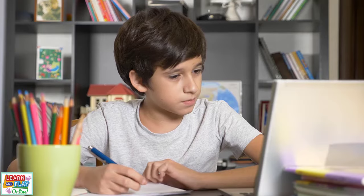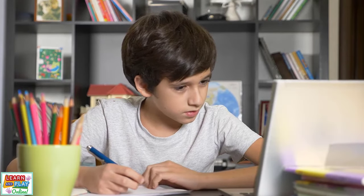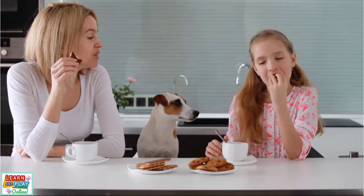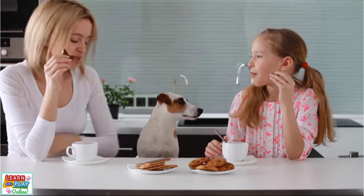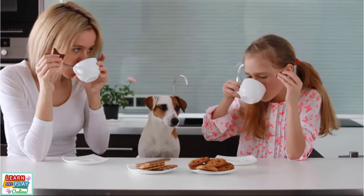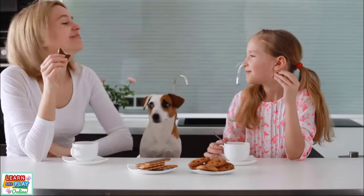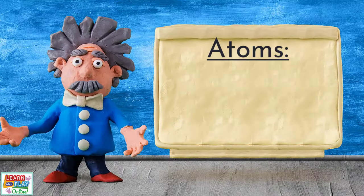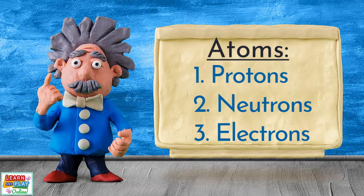Everything from the pencils and books that you use, the buildings and furniture within them, to the food that you eat and the animals that you see are made up of atoms. Atoms are also the makeup of things you cannot see, such as air. If atoms did not exist, you and everything around you would also not exist. Atoms are made up of three particles: protons, neutrons, and electrons.